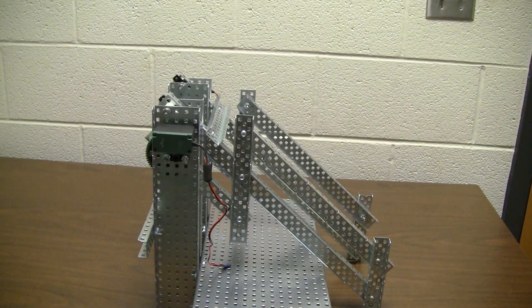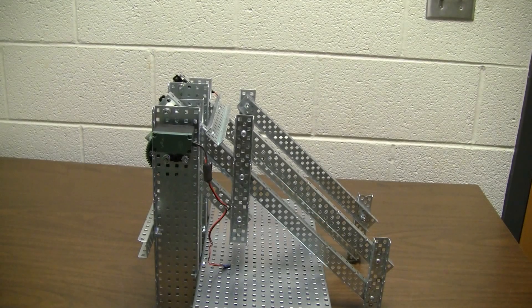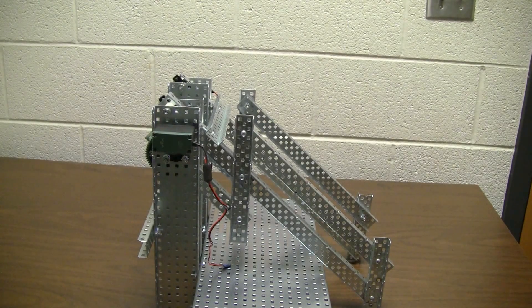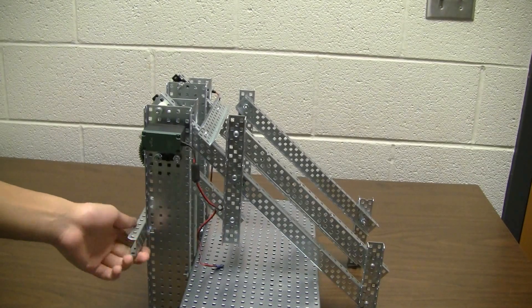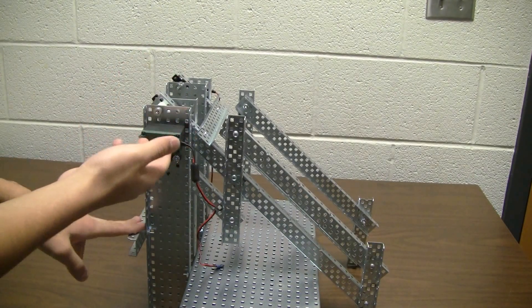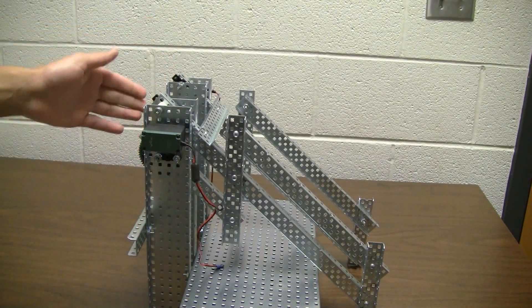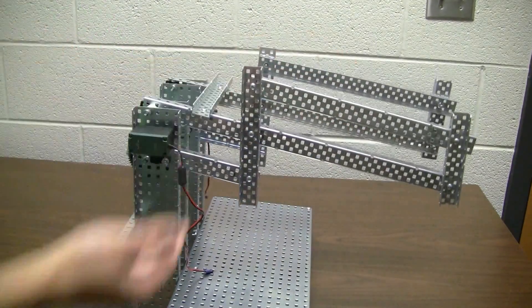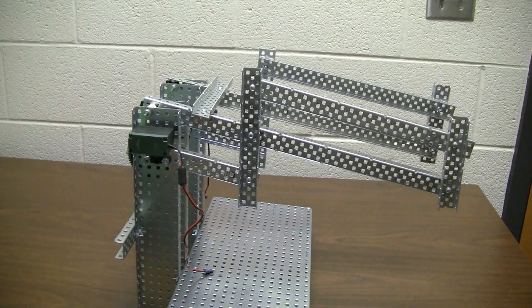First we are going to talk about how the 6-bar works and why would you want a 6-bar lift for your robot. How a 6-bar works is you have this motor on the left side and the right side. The motor powers C channels and the C channels lift to maximum height.